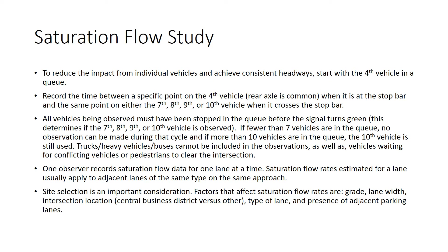Typically, one observer records the saturation flow for one lane at a time. Saturation flow rates estimated for a lane usually apply to any adjacent lanes of the same type on the same approach, so if you have three through lanes with the same characteristics, you only need to study one. We also need to consider site selection. Factors affecting saturation flow rates include grade, lane width, intersection location (central business district, suburban, or rural), type of lane, and presence of adjacent parking lanes. You also need a substantial enough queue — at least seven vehicles — so off-peak or low-volume intersections may not allow data collection.